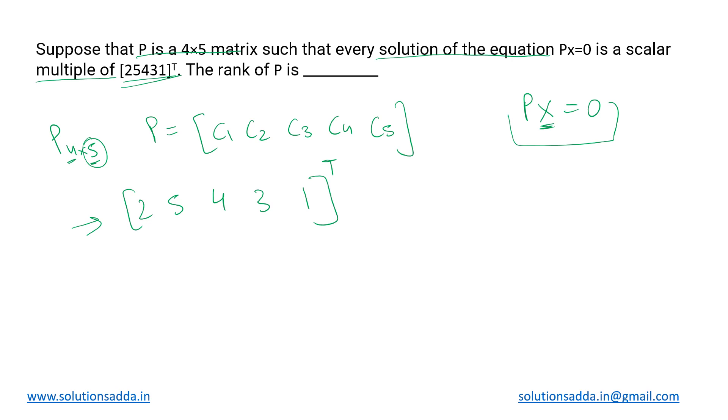So we can say that this matrix x can be written as [2k, 5k, 4k, 3k, 1k]^T. This is because we took the given vector as a reference and multiplied some constant k with it to get the matrix x this way.